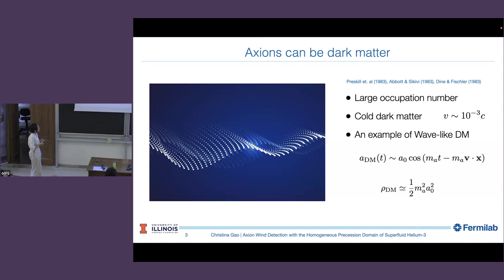You can write the axion field with amplitude A0, set by the dark matter density. Then there are these phase terms inside the cosine. The oscillation goes like the mass times the time minus this momentum of the axion times the position. Usually in dark matter haloscopes, you ignore this momentum term because they're not sensitive to it. However, in this talk, we are going to rely on this term.